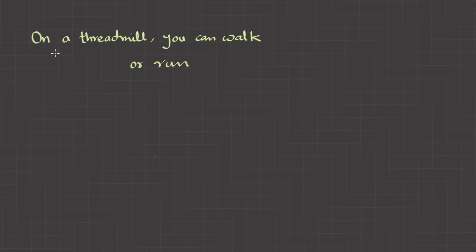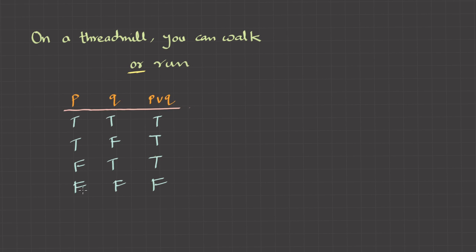Now that we are done with disjunction, think about this statement: on a treadmill, you can walk or run. It has the connective OR, so it should fall into the category of disjunction. Let's analyze with truth tables. False and false — that is, you can't walk and you can't run — that's not correct, therefore it should be false. So this is fine.